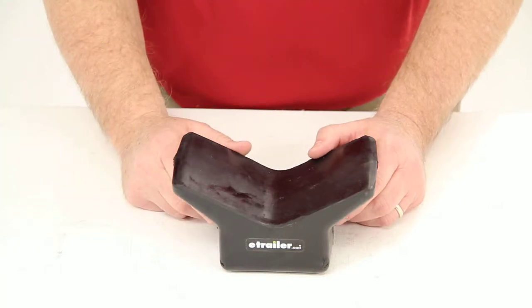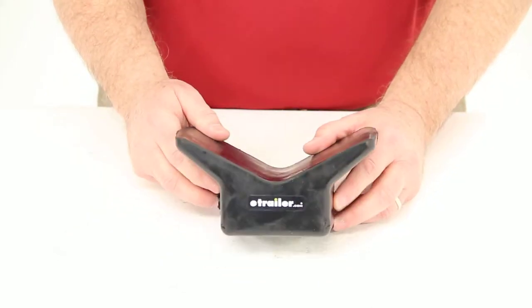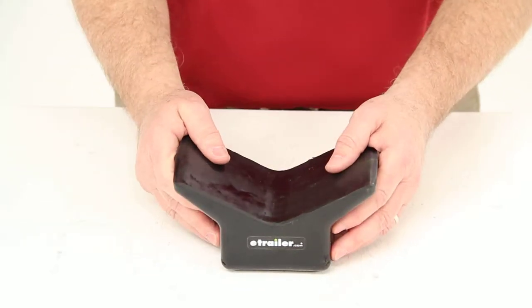Today we're going to review part number YR7Y44-4. This is the Yates Y style bow stop for boat trailers.